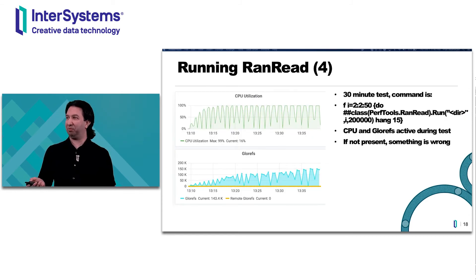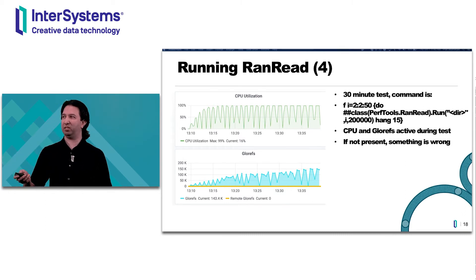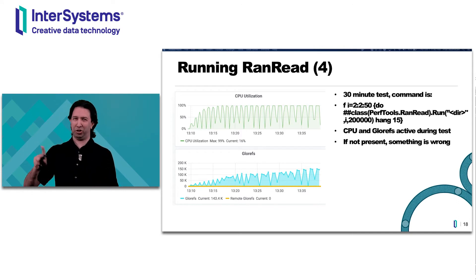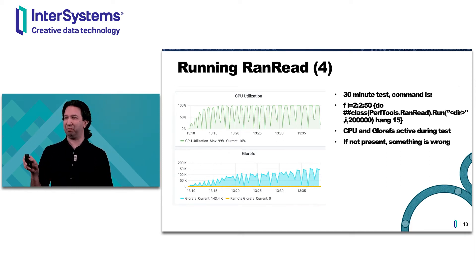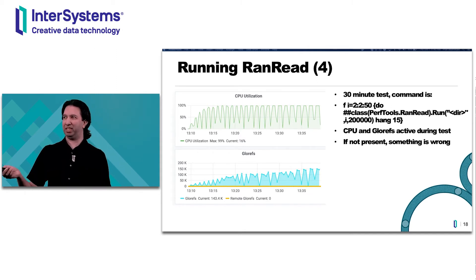This is what it looks like in SAM during a 30-minute test, running from 2 threads up to 50 threads in steps, each with 200,000 iterations, with a 15-second hang between runs for spacing. SAM has about a 15 to 20-second time slice and doesn't read continuously, so that 15-second gap was essentially just to make sure there's a visible drop between runs.